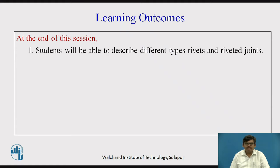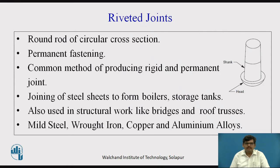Rivets are a round rod of circular cross section. Rivets are used for forming permanent fastenings or permanent joints. They are made up of mild steel, wrought iron, copper, and aluminium alloys. The common method of producing a rigid and permanent joint is riveting. With the help of this you can form joining of sheets to form boilers, storage tanks, and most commonly riveted joints in bus bodies.